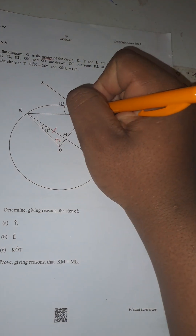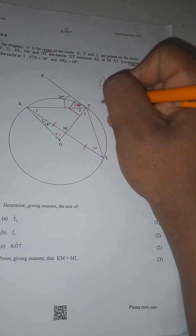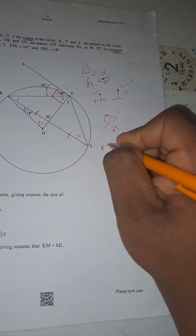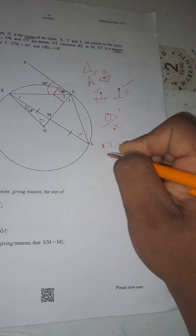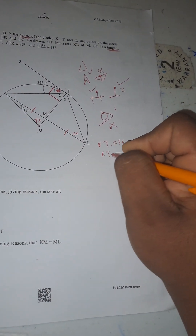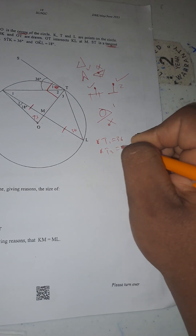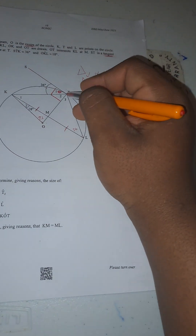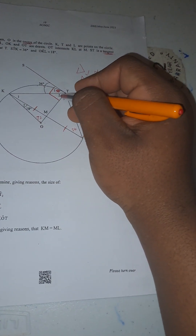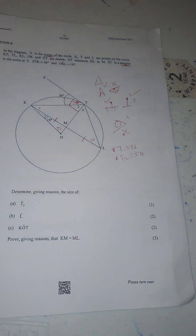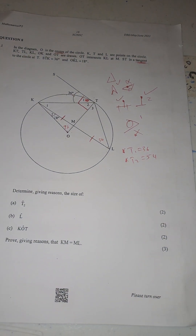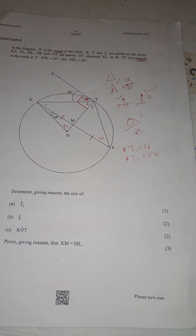Wait — I made a mistake. I was already given T1, so T2 is what I should find. T1 equals 36 degrees as given, and T2 equals 54 degrees. Let's continue.